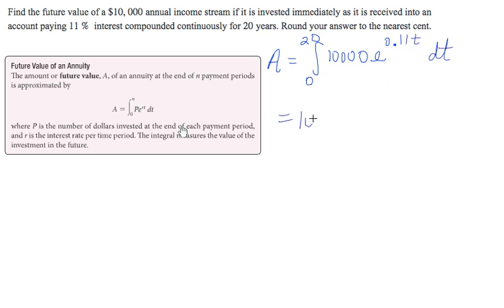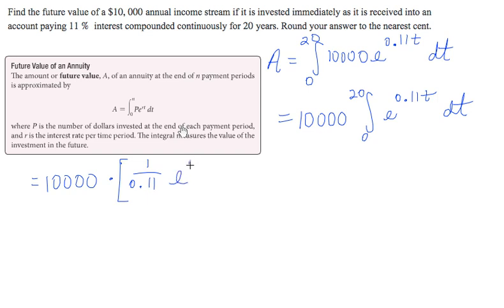So I'm going to pull the 10,000 out front. And to integrate or anti-differentiate e to the 0.11t, we multiply times 1 over the coefficient of t right here. So 1 over 0.11 times e to the 0.11t. We're going to take that from 0 to 20.